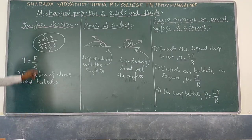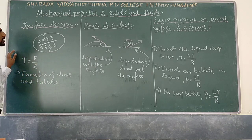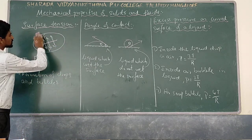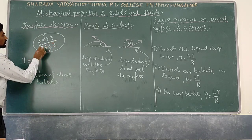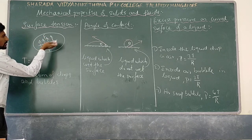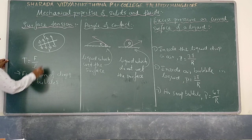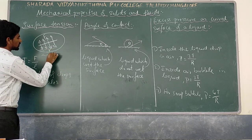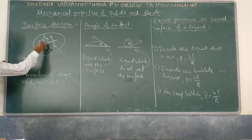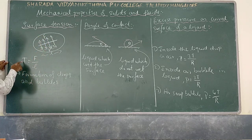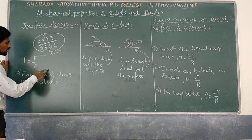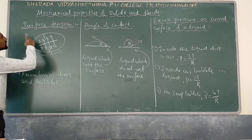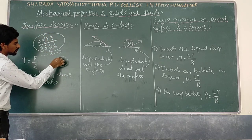Next: surface tension. Surface tension is the property of a liquid by which the free surface of a liquid will have minimum surface area. Consider a line of molecules of length L on the surface; the force on one side divided by L is surface tension, defined as F by L. The reason for formation of bubbles and drops is surface tension, because it minimizes surface area.